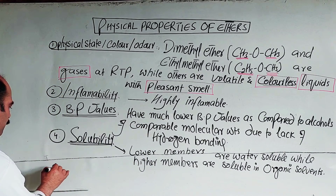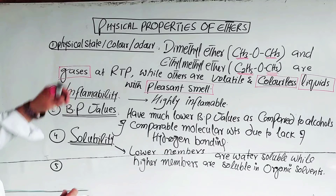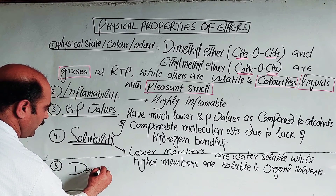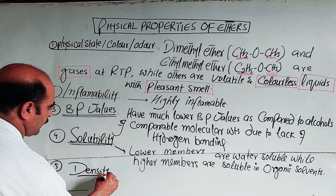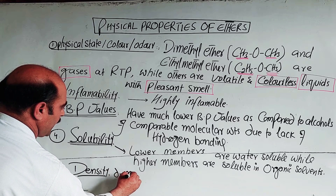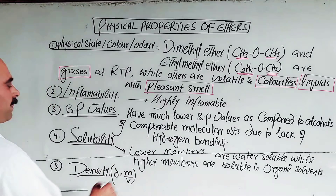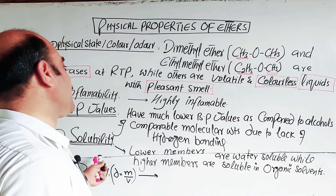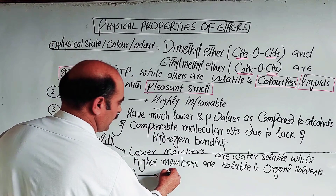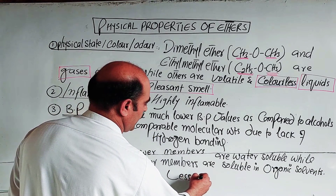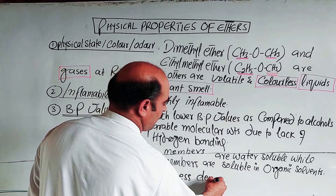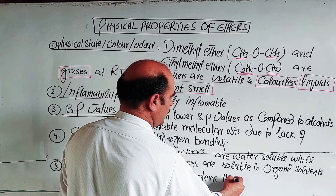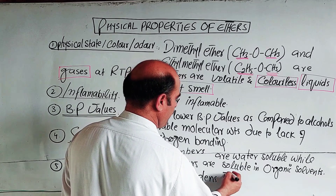The next physical property is density. Density equals mass per unit volume: d = m/v. The densities of ethers, as compared to water, are less dense than water.